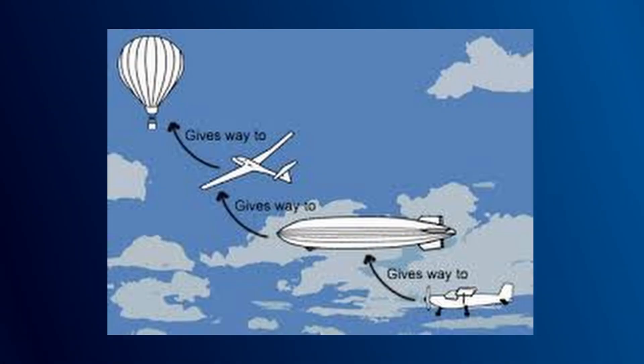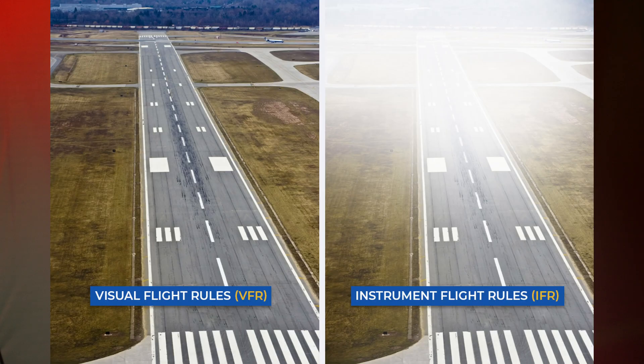The next and very important module is Rules of the Air. This section covers all the rules every pilot must follow while flying — from collision avoidance and right-of-way rules to light signals and formation flying. You will also cover VMC and IMC conditions. Questions often test what a pilot should do in specific scenarios, so master the logic behind each rule, don't just memorize.